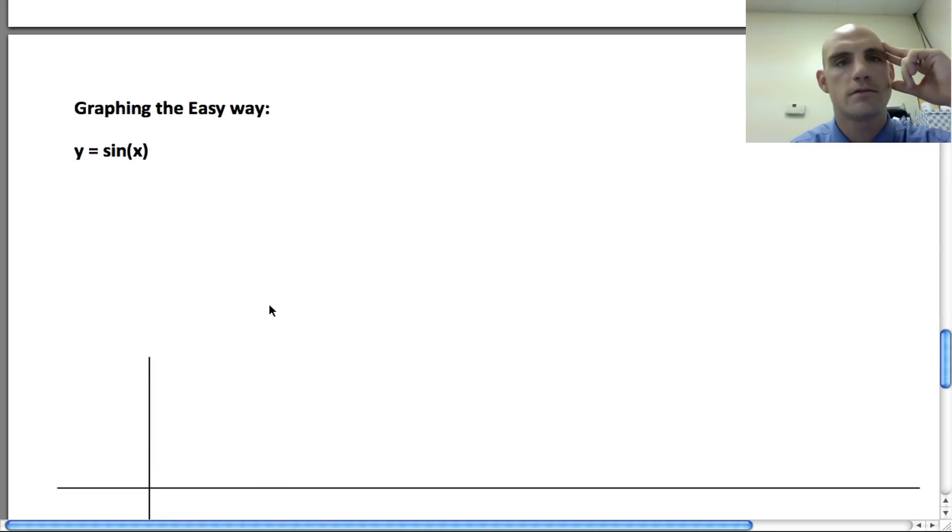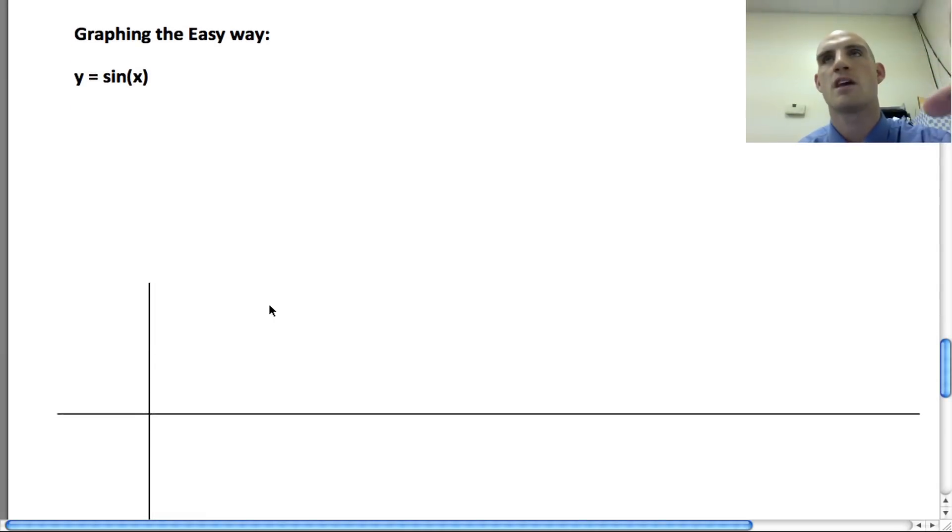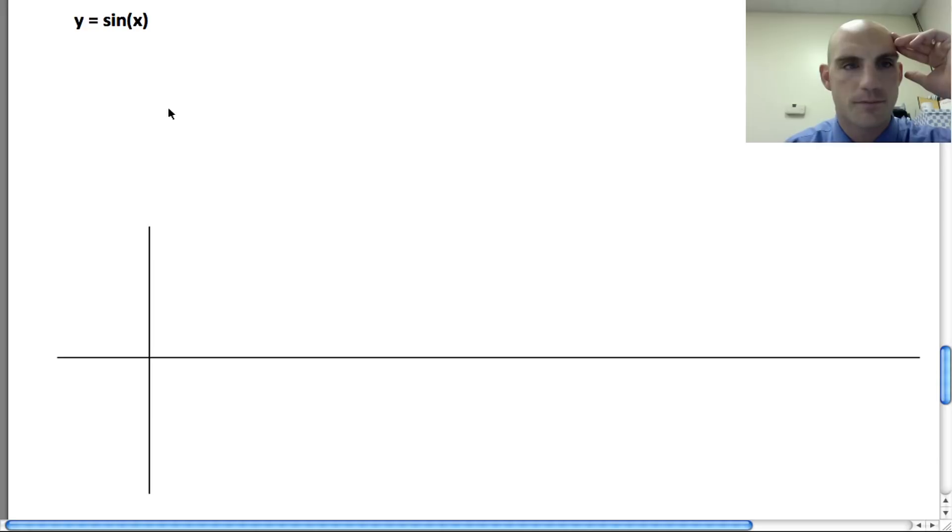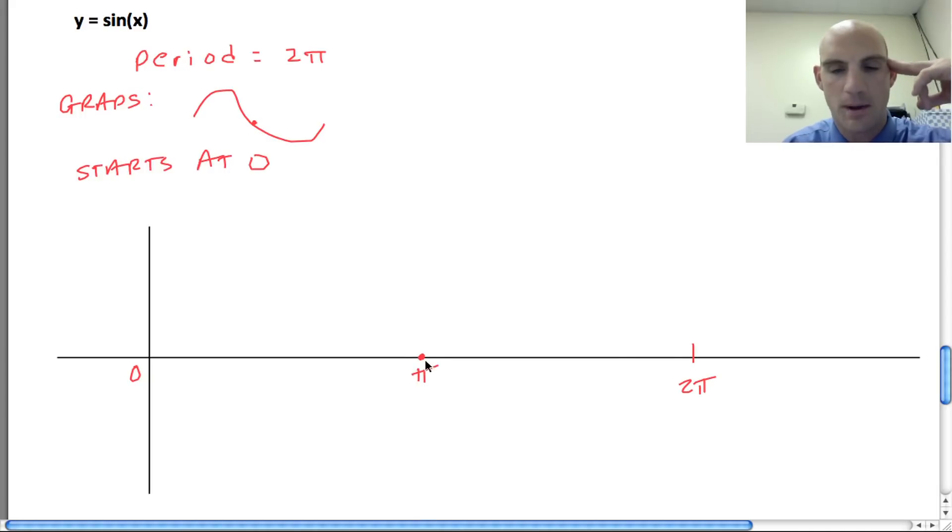Now, the easy way. We plotted a bunch of points. But here's what I want you to kind of get out of this. If I'm at y = sin(x), I know that the period is 2π. And I know that it looks like this. It starts at 0. What I'm going to do is encourage you to do this. Halfway, it turns. I know that if it starts at 0 and it goes to 2π, I know that halfway it's going to be at 0 again. So that's going to be π. Because halfway to 2π is π.